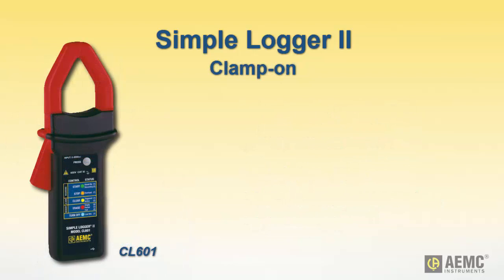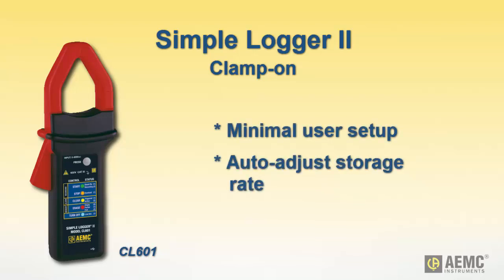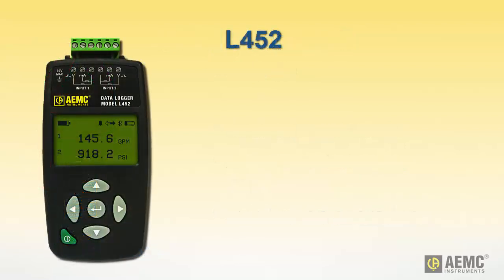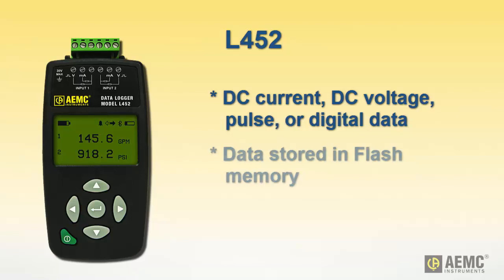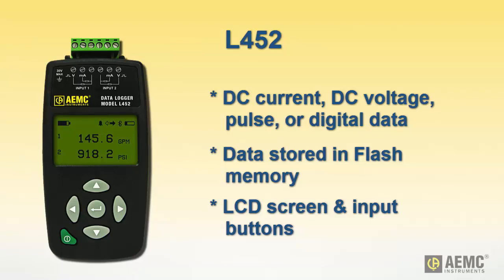The clamp-on Simple Logger is a self-contained data logging AC current probe. The logger requires minimal user setup and can automatically adjust its storage rate. One-button operation makes this clamp-on logger extremely easy and quick to use. The model L452 combines the capabilities of multiple data logger instruments while providing advanced usability and interface features. The L452 can log DC voltage, DC current, pulse, or digital data using either one or two independent channels. Measurements can be performed directly on the instrument or through a variety of sensors, and data is stored in the instrument's internal flash memory. You can set up the instrument and view real-time measurement data through the front panel LCD screens and input buttons.